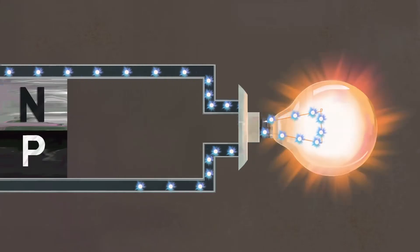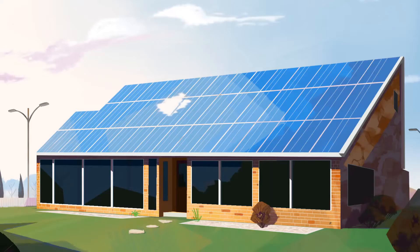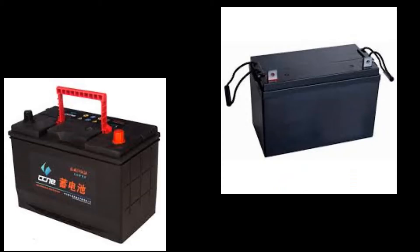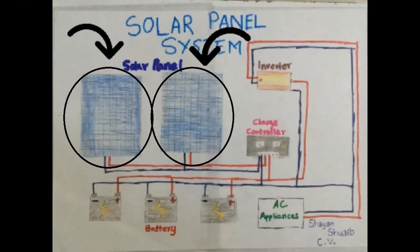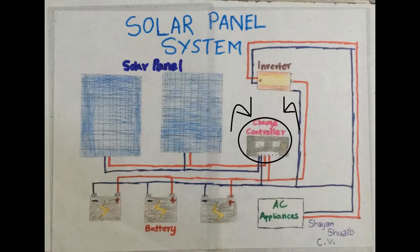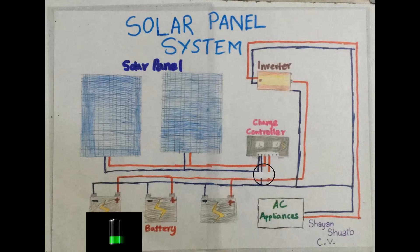This electricity can be used for household purposes, stored in a battery, or transported via power lines. From a solar panel the electricity is generated and it goes to the charge controller. This charge controller will automatically disconnect the battery from the solar panel once the battery is fully charged.